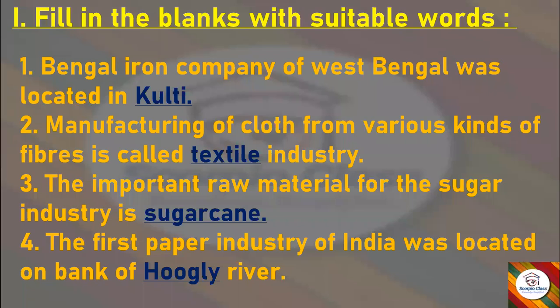The first main section is Fill in the Blanks. First: Bengal Iron Company of West Bengal was located in — answer is Kulti. Next: Manufacturing of clothes from various kinds of fibers is called — answer is Textile Industry. Next: The important raw material for the sugar industry is — answer is Sugarcane. Next: The first paper industry of India was located on the bank of — answer is the Hooghly River. With this we come to an end with the Fill in the Blanks.